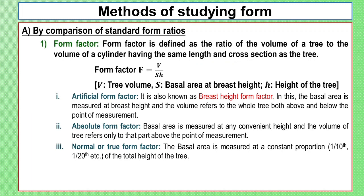For the concept of form factor: the form factor is defined as the ratio of the volume of a tree to the volume of a cylinder having the same length and cross section as the tree. So form factor F equals V divided by (S times H), where V is the tree volume, S is the basal area at breast height, and H is the height of the tree.